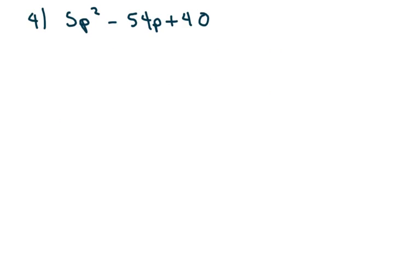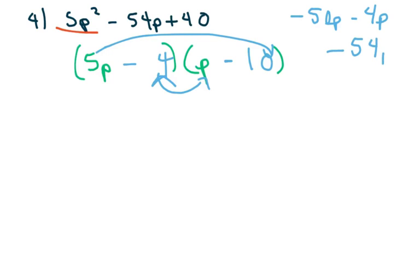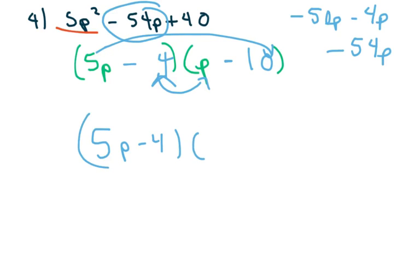The next one — I can't factor anything out, so I'm just going to have to factor directly. I have 5p and p for my first term, and I need a 54. Looking at the outer-inner, I know these are both going to be minus. I'm going to use 10 and 4: that gives negative 50p, and minus 4p, which gives you negative 54p — which is what we wanted. So our final answer is 5p minus 4, times p minus 10.